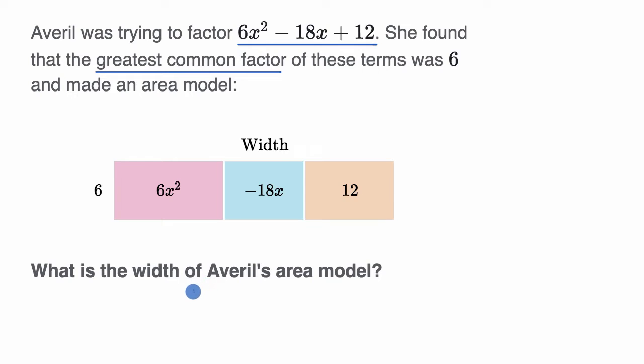All right, so there's a couple of ways to think about it. She's trying to factor 6x² - 18x + 12, and she figured out that the greatest common factor was 6.